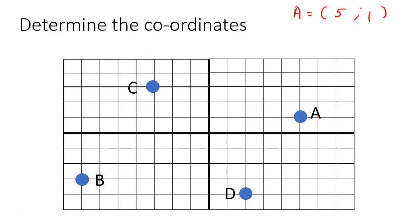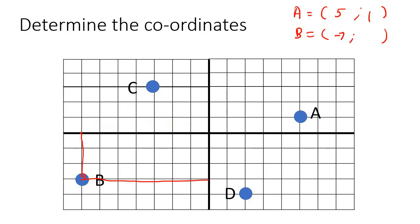Now pause if you need to and make sure you get this. And then B is going to be over here, so if we just draw a line up and draw a line to the side — the x will be 1, 2, 3, 4, 5, 6, 7 but it's negative because it's to the left, and then the y is going to be 1, 2, 3 down, so that'll be negative 3.